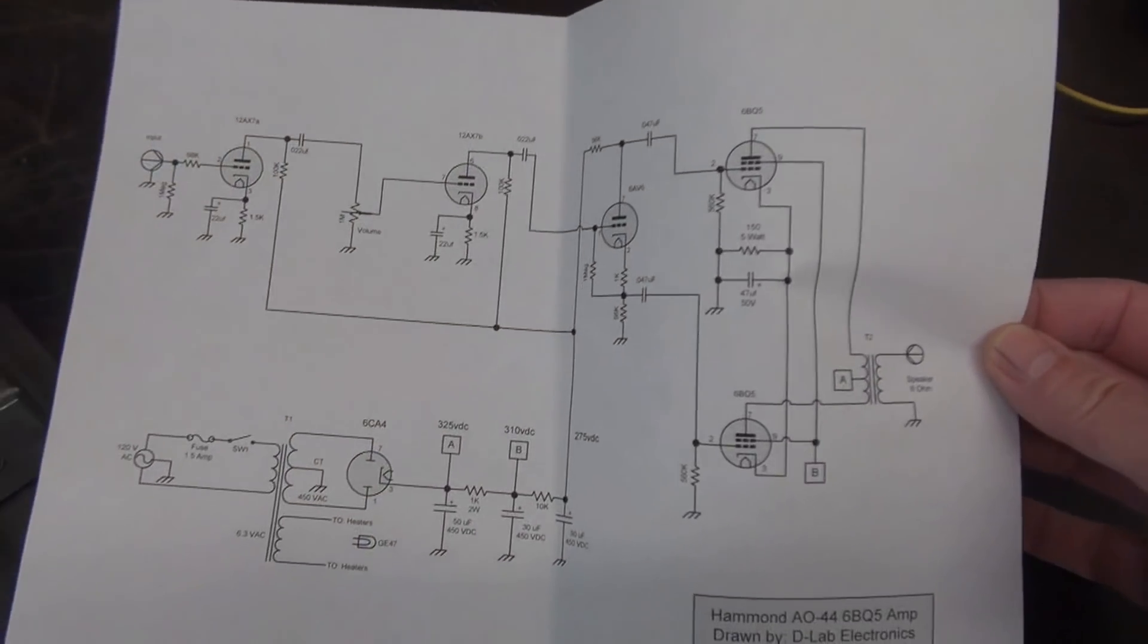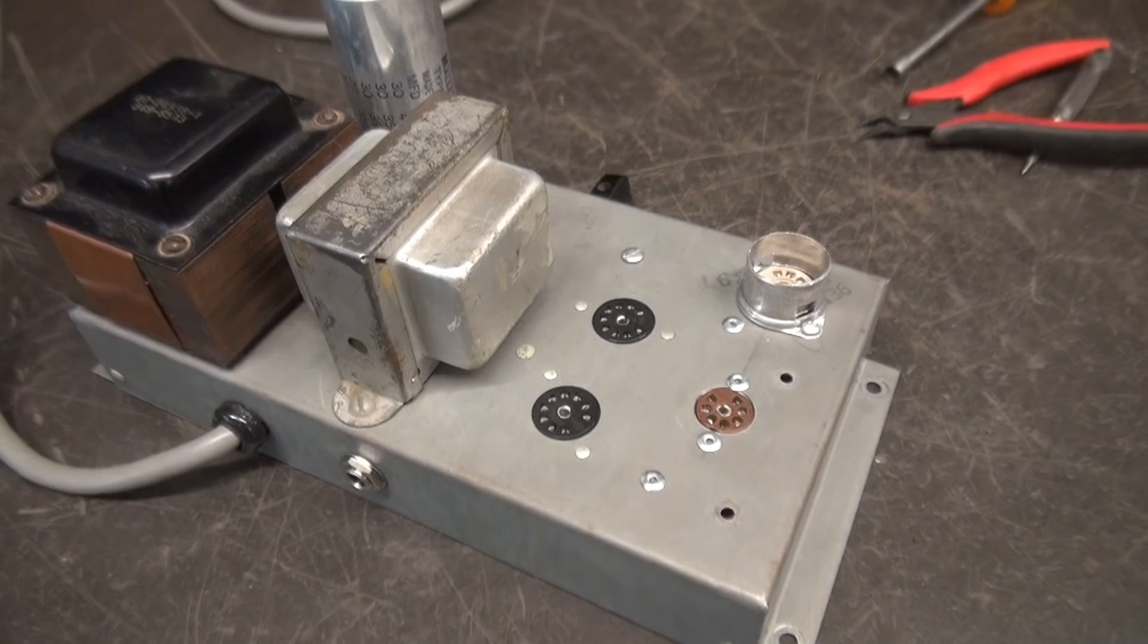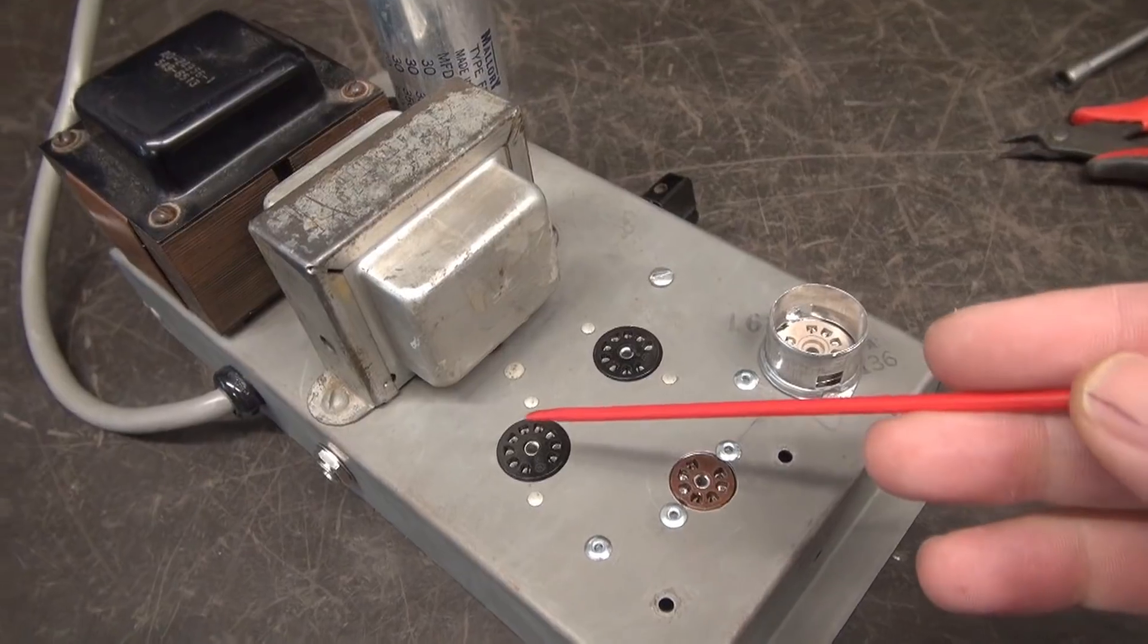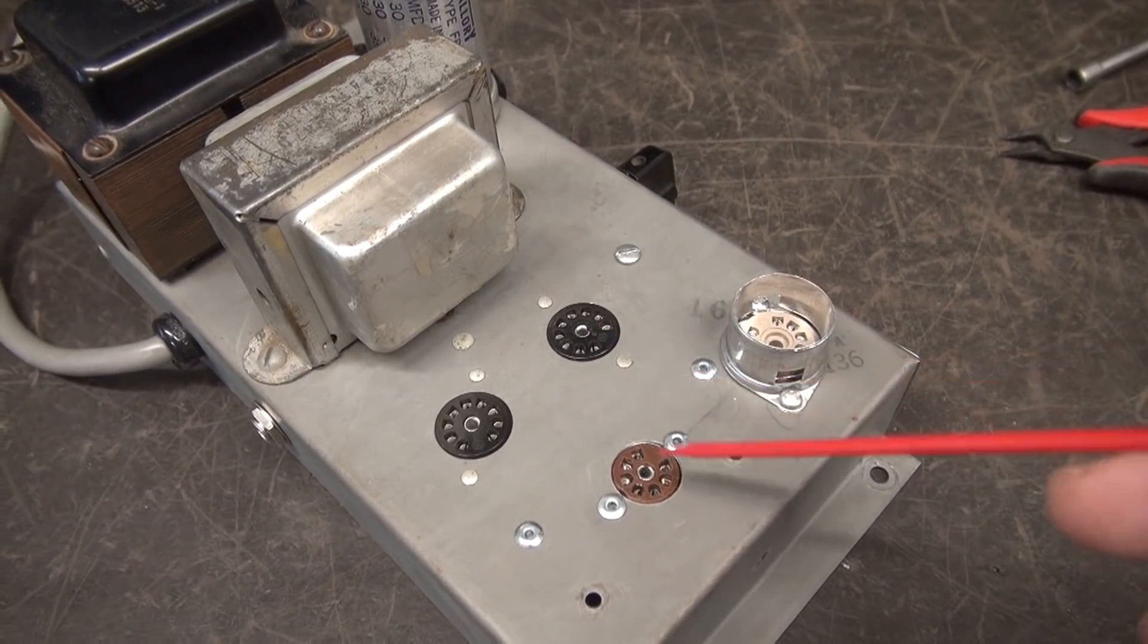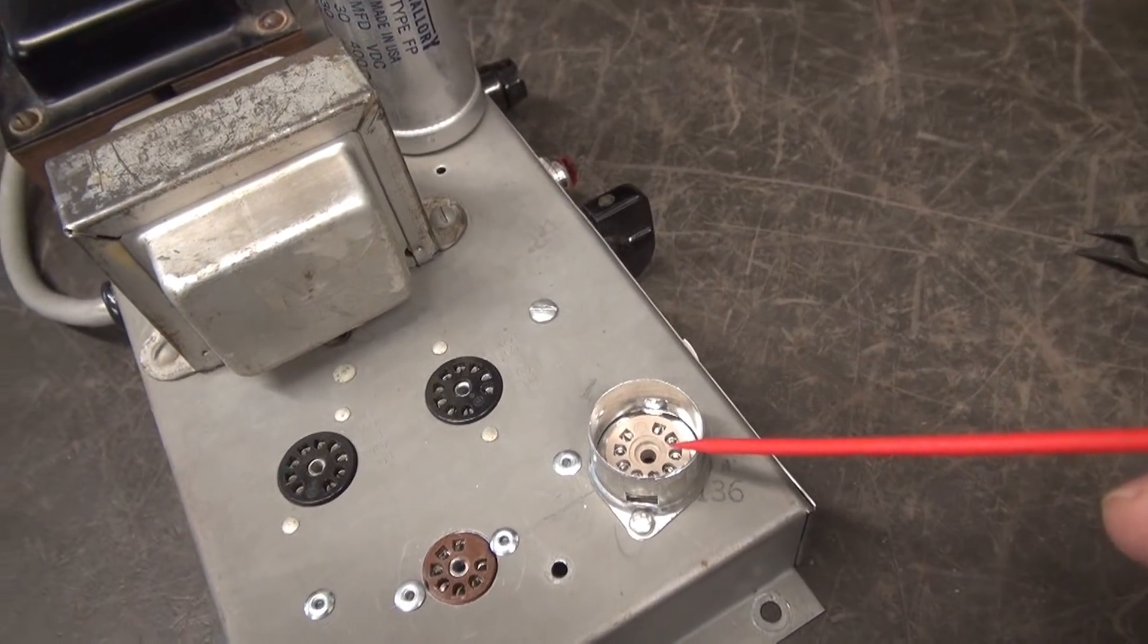I've made up a little schematic here. I'll post this on the video at the end. We're going to keep this design as simple as possible. As I said, we're going to convert these output tubes to 6BQ5s. The inverter tube will be a 6AV6, 12AX7 input.